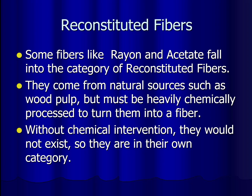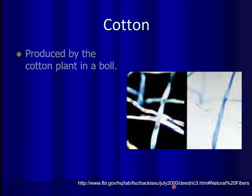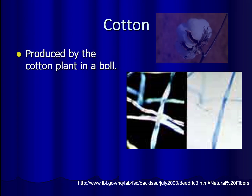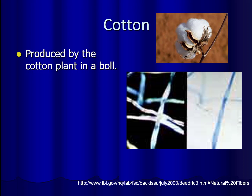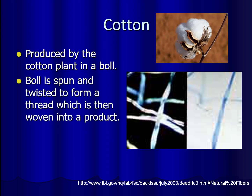Now we're going to discuss some individual types of fibers, starting with the most common fiber in clothing: cotton. Under a microscope, cotton fibers look flat and sort of like a twisted ribbon. Cotton is generally produced by a cotton plant in a structure called a boll, which looks almost like a cotton puff. That cotton boll is spun and twisted after harvest to form a thread, which is then woven into a product.